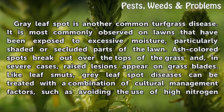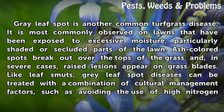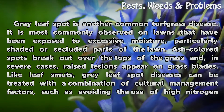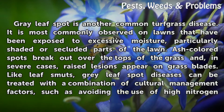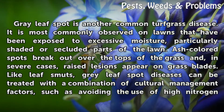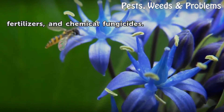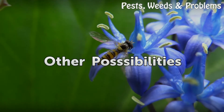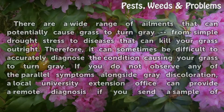Gray leaf spot is another common turfgrass disease. It is most commonly observed on lawns that have been exposed to excessive moisture, particularly in shaded or secluded parts of the lawn. Ash-colored spots break out over the tops of the grass, and in severe cases raised lesions appear on grass blades. Like leaf smuts, gray leaf spot diseases can be treated with a combination of cultural management factors, such as avoiding the use of high-nitrogen fertilizers, and chemical fungicides.